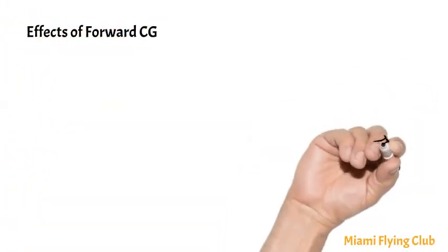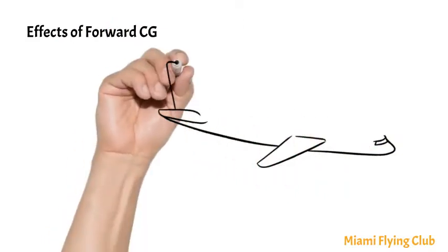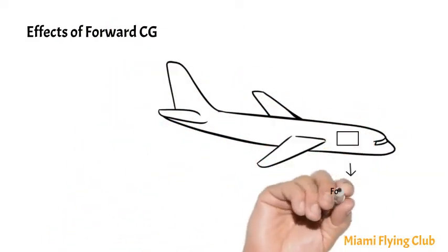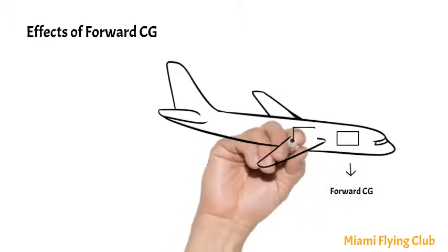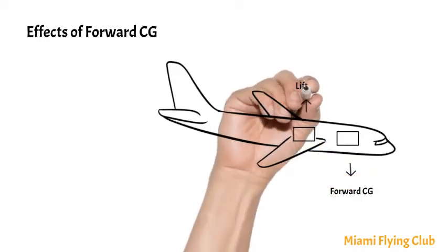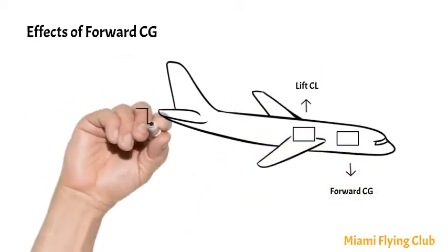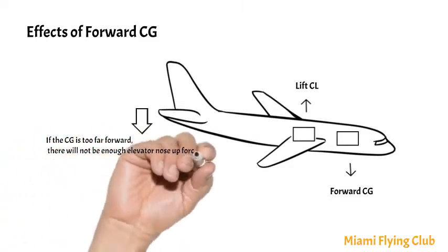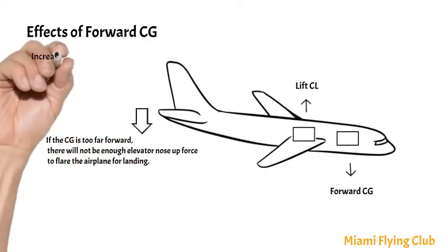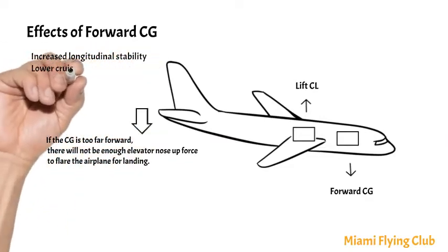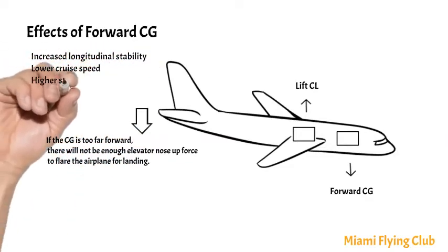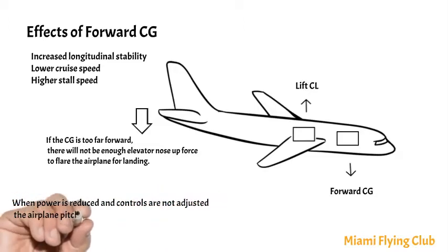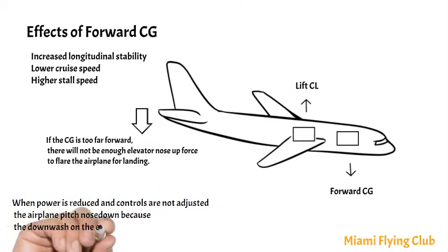Forward Center of Gravity: an airplane with its center of gravity forward of the center of lift will pitch down when power is reduced. This will increase the airspeed and the downward force on the elevators. This increased downward force on the elevator will bring the nose up, providing positive stability. The farther forward the center of gravity is, the more stable the airplane. This means that a stable airplane is easy to fly and requires less effort to control.